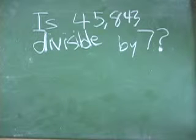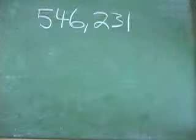So I have a method here that I can show you, and we're going to find out today if 45,843 is divisible by 7. So the key is right here with this number: 546,231. This is the whole key.